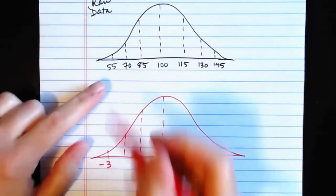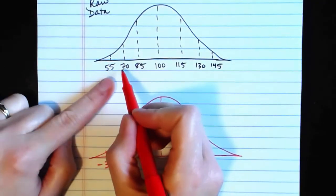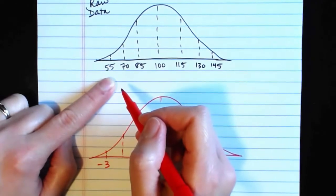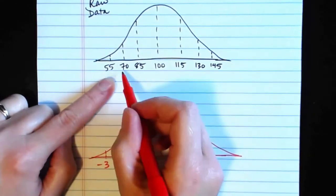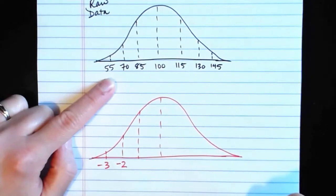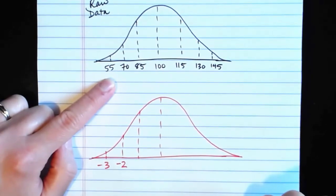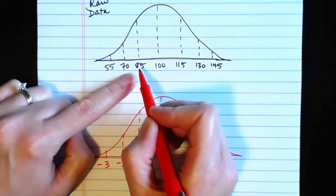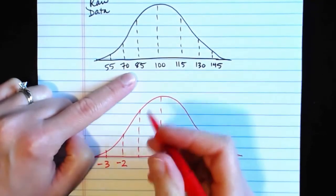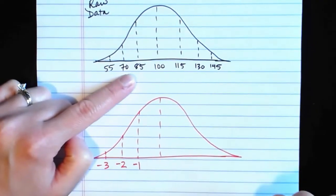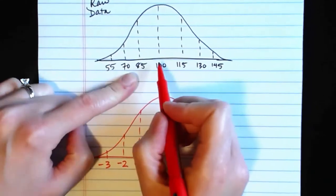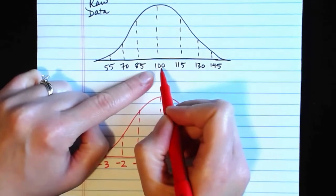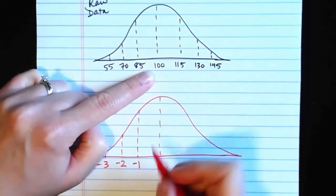We would do the same thing for the 70. 70 minus the mean of 100 would be negative 30, divide by 15, which is the standard deviation, we would get negative 2. 85 minus 100 would be negative 15, divide by the standard deviation of 15, we get negative 1. 100 minus the mean of 100 would be 0, divide by the standard deviation of 15 is still 0.